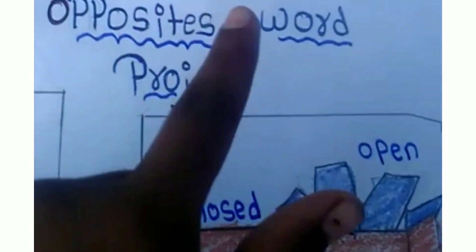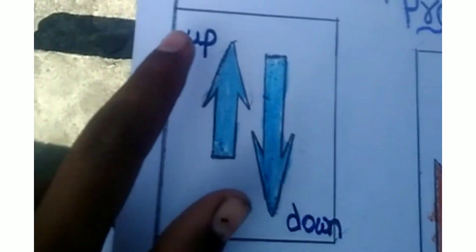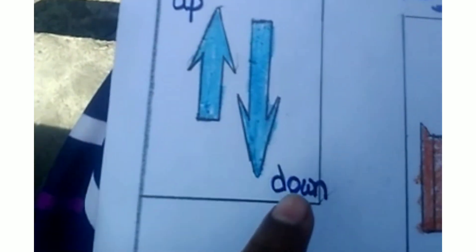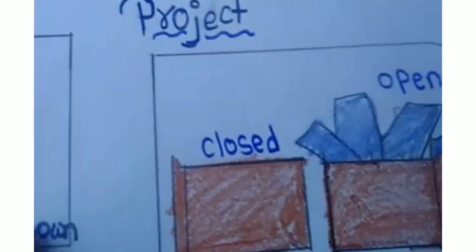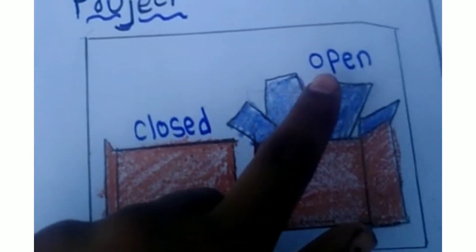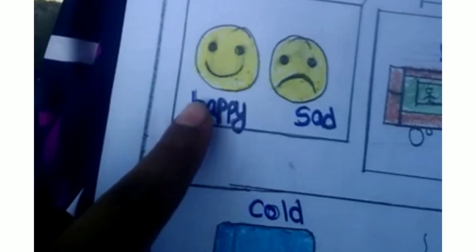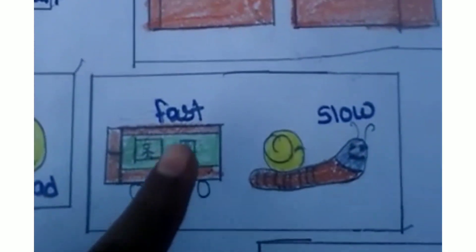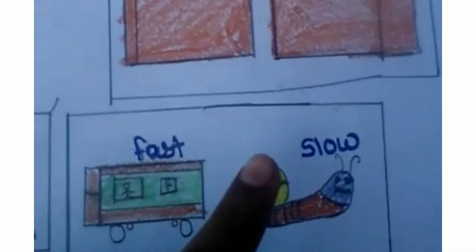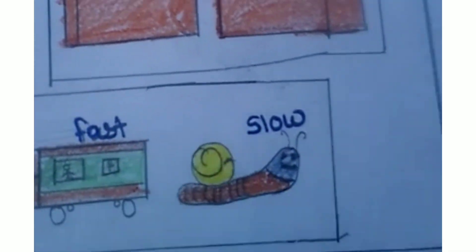Opposite words. Up and down. Close and open. Happy and sad. Fast and slow.